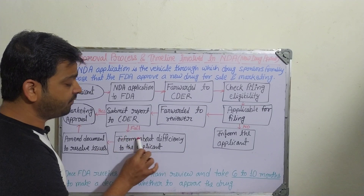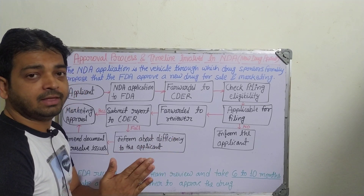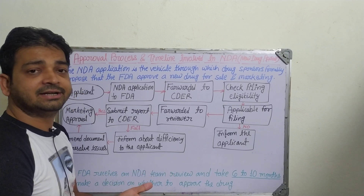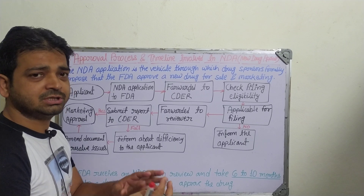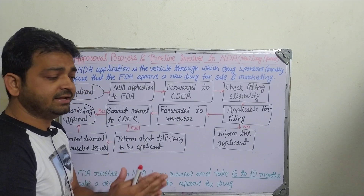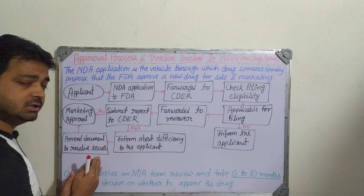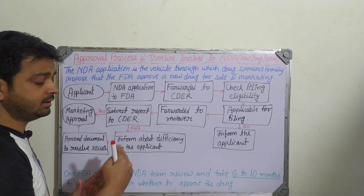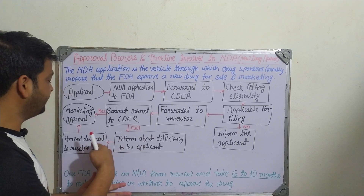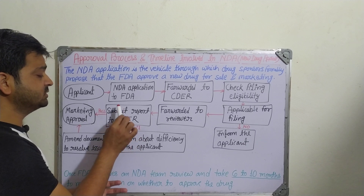If the review fails, CDER will inform the applicant about the deficiencies — such as missing safety profile, efficacy profile, clinical trial data, preclinical animal model toxicity, and other parameters. If anything is missing or doubtful, they will inform the applicant. The applicant then amends the documents to resolve the issues, going back to preclinical or clinical stages wherever the particular gap exists.